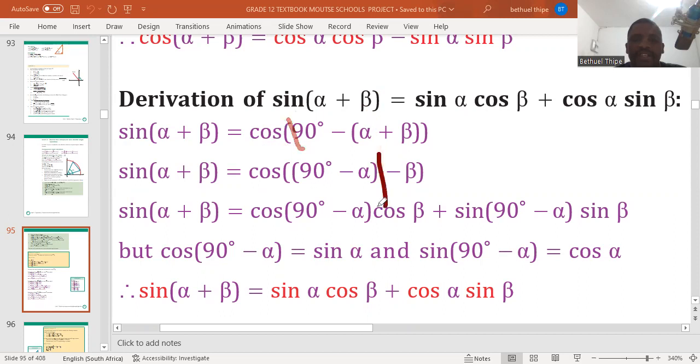And remember to group this angle as one. Make sure that 90 minus alpha, we treat them as one angle. So that when you go to your formula sheet, you can treat this as one angle. It can be an angle A or it can be an alpha, depending on the formula sheet.